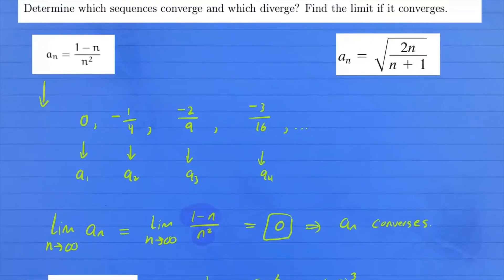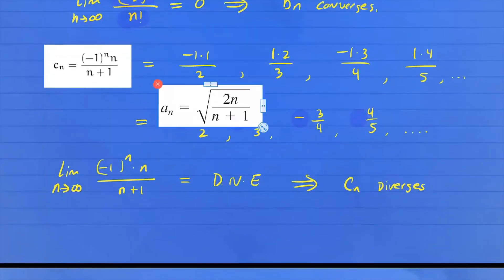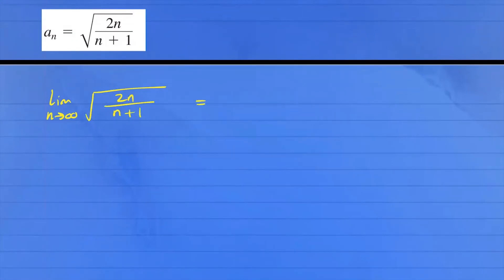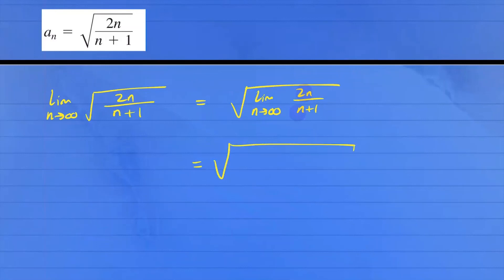For the last problem, we determine if the sequence d_n converges or diverges by taking the limit as n approaches infinity of the square root of two n over n plus one. Using the limit property, we push the limit inside the square root, giving us the square root of the limit of two n over n plus one. This limit equals the ratio of leading coefficients, which is two over one. So the result is the square root of two, and the sequence converges.